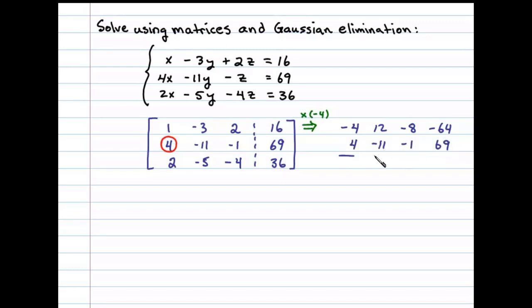Now adding these two rows together, we'll get 0, 1, negative 9, and 5. We'll use this to replace the second row.